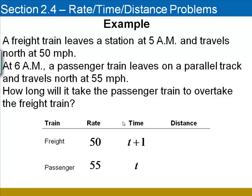We multiply rate by time to get the distance traveled. So for the freight train, that's going to be 50 times the time, t plus 1. And for the passenger train, that's going to be 55 times t.